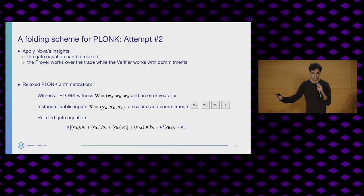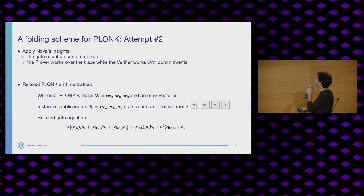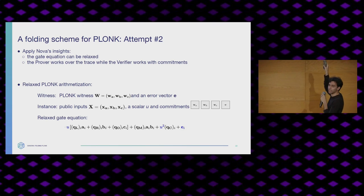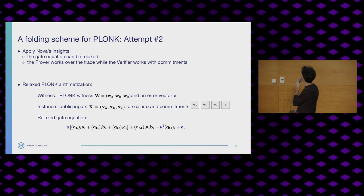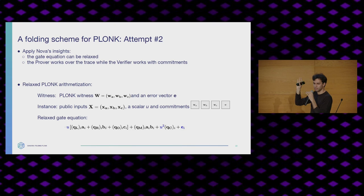Relaxed Plonk — this is where the name Sangria comes from. The witness is still our Plonk witness: those three columns. But we now have a new column called the error vector — we'll see how we use it. The instance is still our Plonk instance, but we also have a scalar U and some commitments. The notation of WA in a box means a commitment to WA. So we have commitments to all of the columns in the witness and a commitment to the error. This is a relaxed gate equation: in blue you can see the new stuff, everything in black is our old gate. We have this U that pops up in places and this E that we've added.